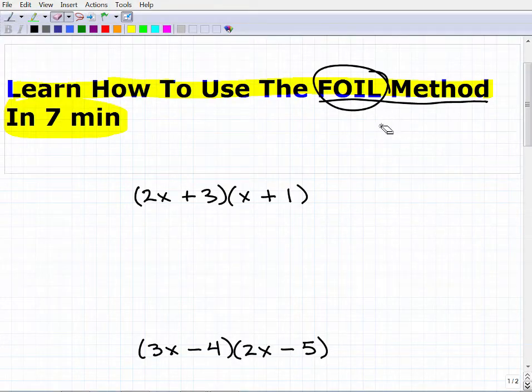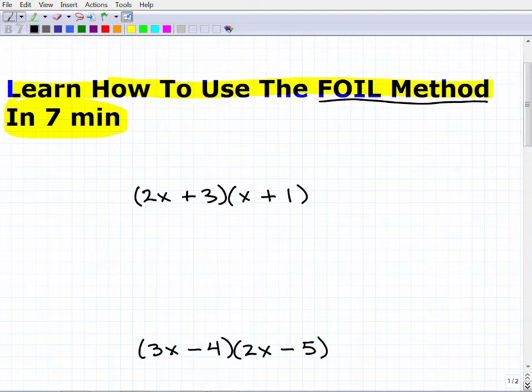And with that being said, now that we know what it is, let's define this little acronym, FOIL. This really should be FOIL. So the F is first, the O is outer, the I is inner, and the L is last.